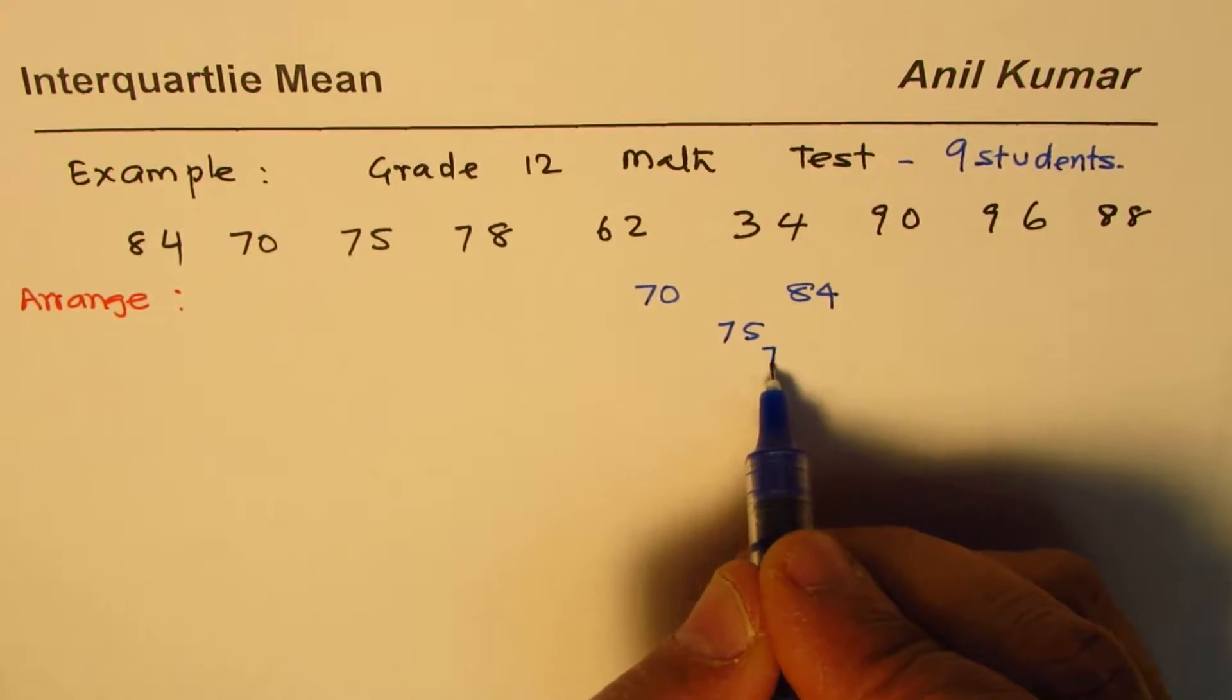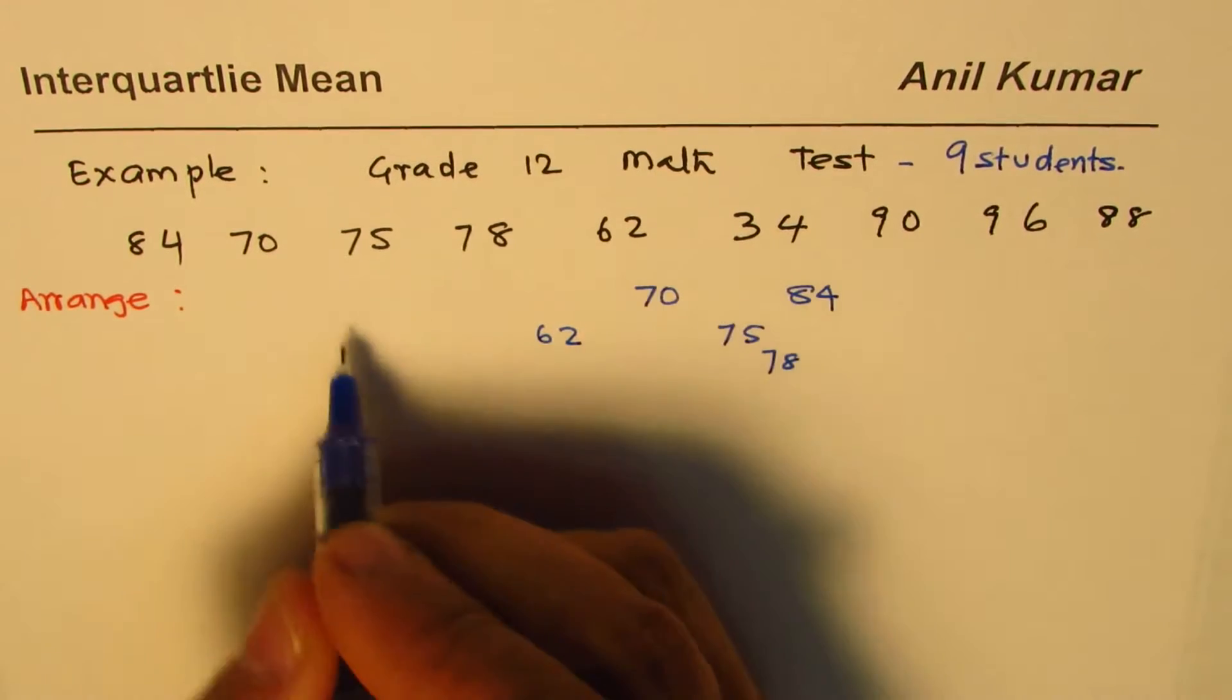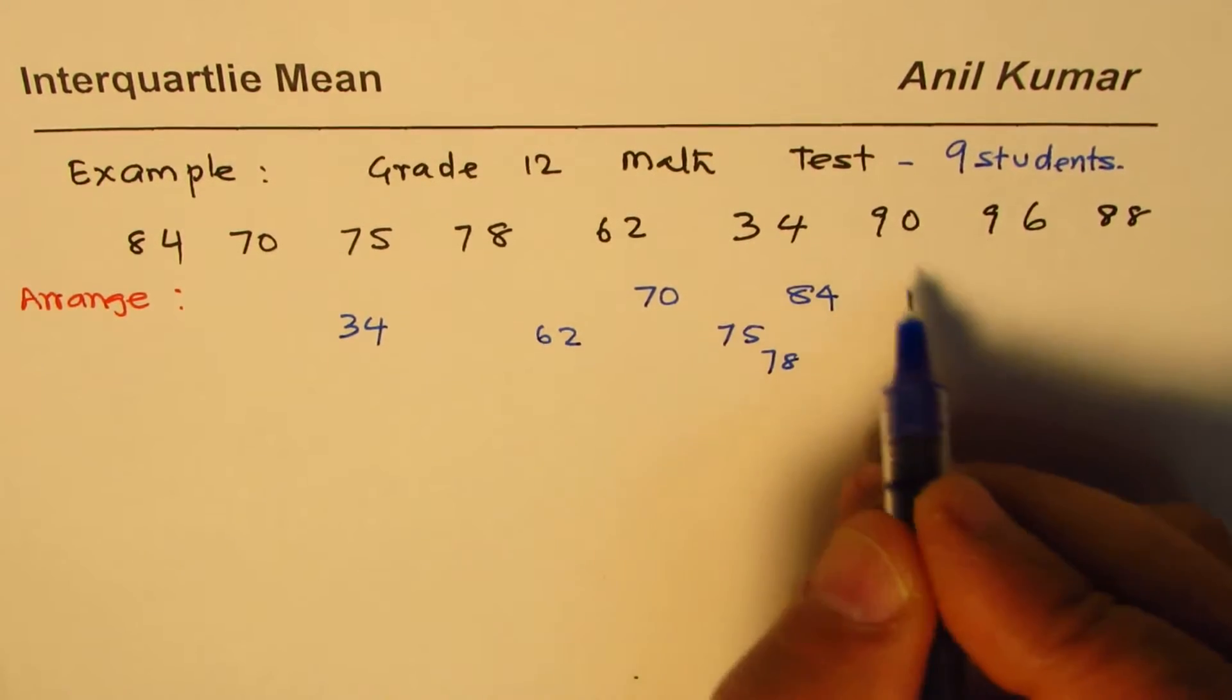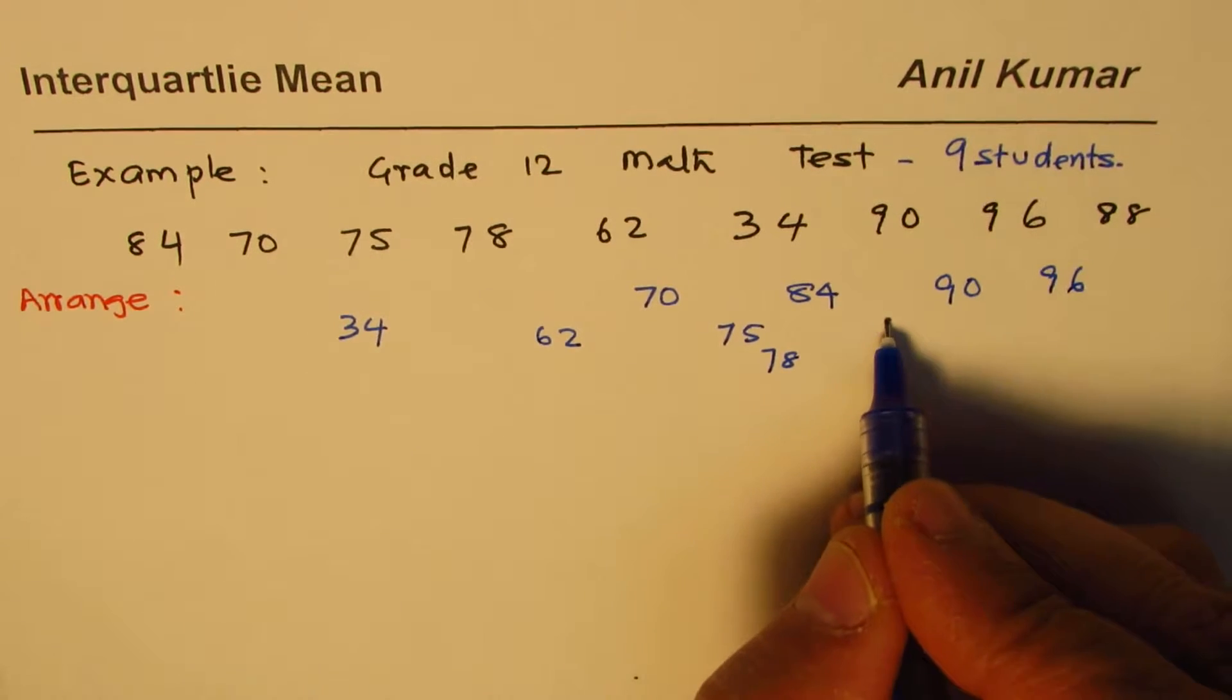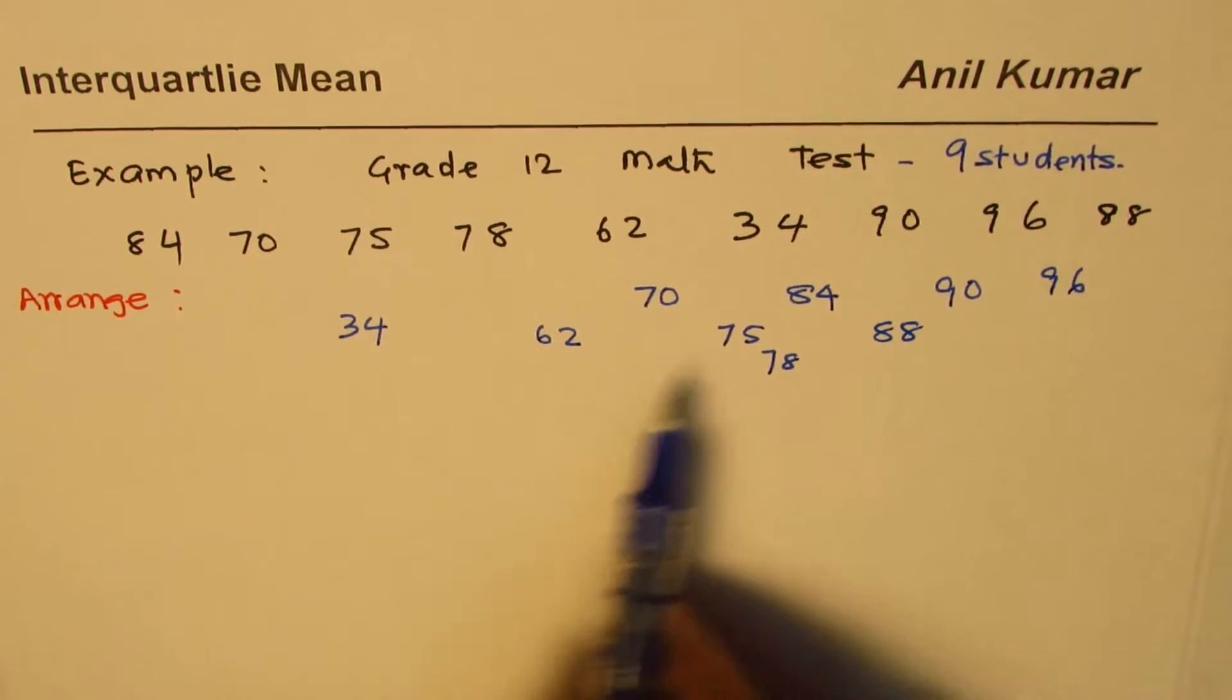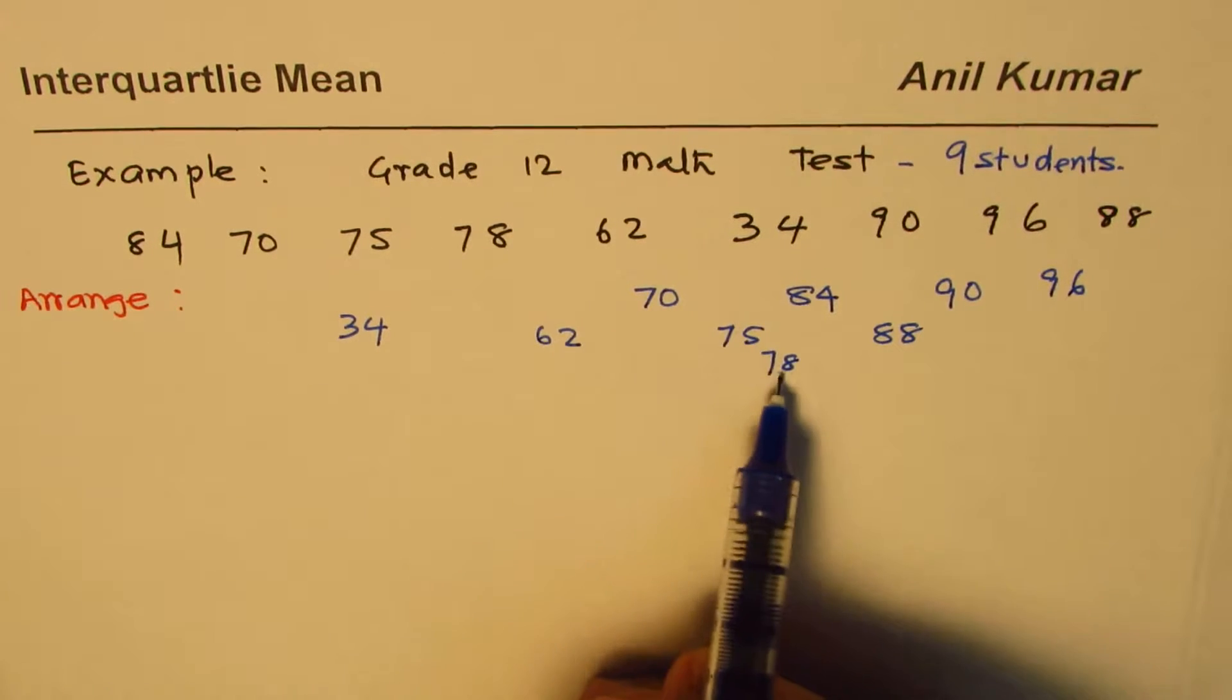62, 34, 90 seems to be on this side, 96 and 88 will come here. So that is how we have nine marks. Let's count them: one, two, three, four, five, six, seven, eight, nine.